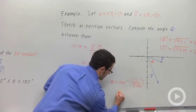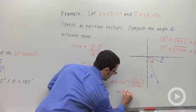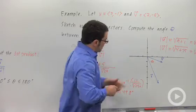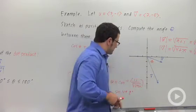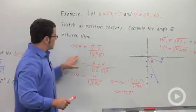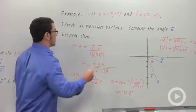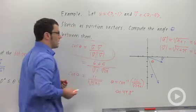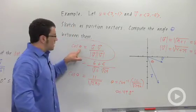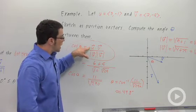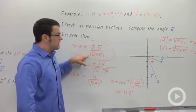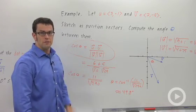That's an approximation, and that looks about right. So remember, when you're calculating the angle between two vectors, use this formula — a very important application of the dot product. Cosine of the angle between two vectors equals the dot product of the two vectors divided by the product of their magnitudes.